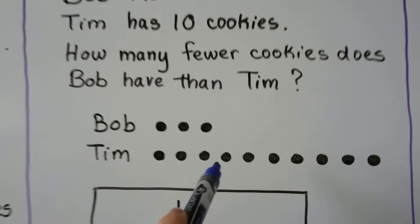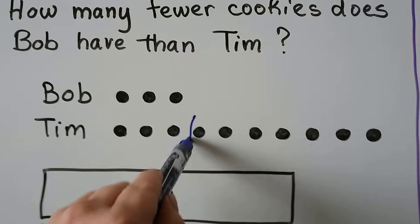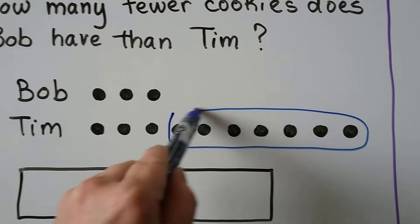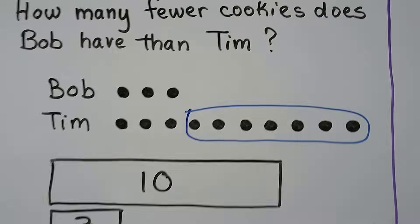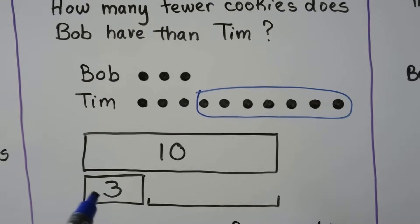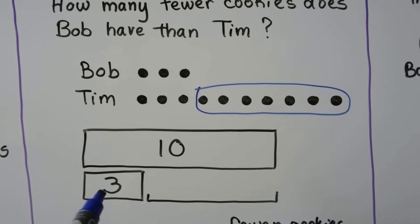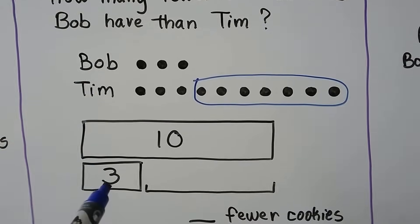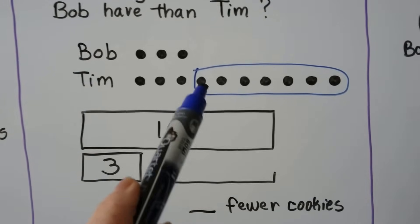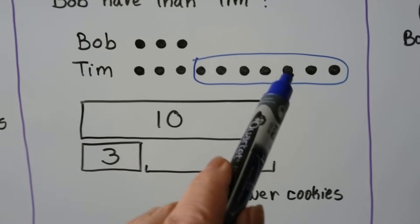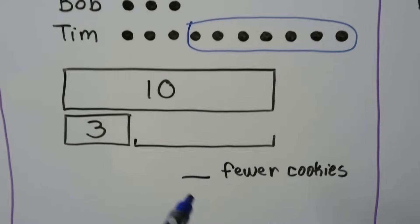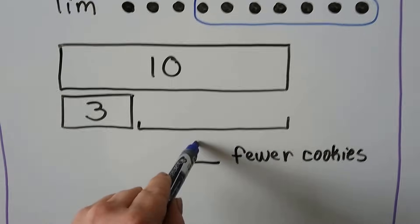It starts right here. The big bar is ten; the little bar is the three that Bob has. And the difference is one through seven — seven fewer cookies.